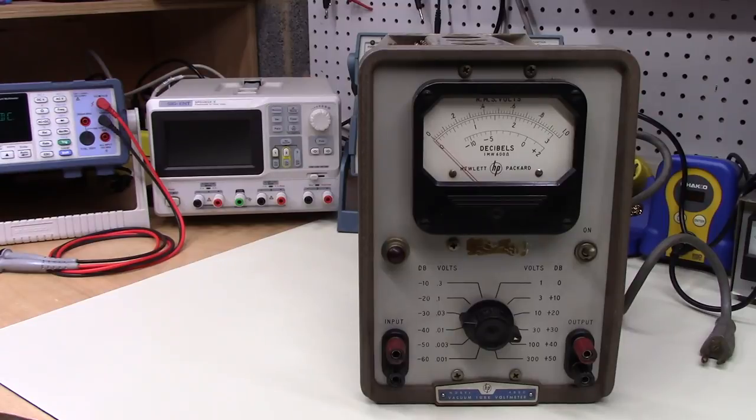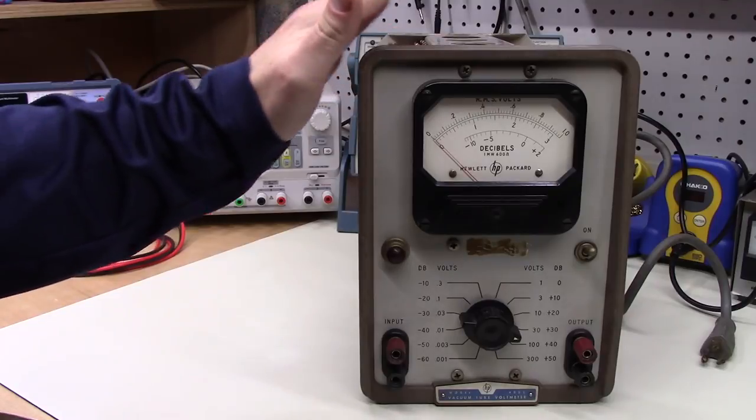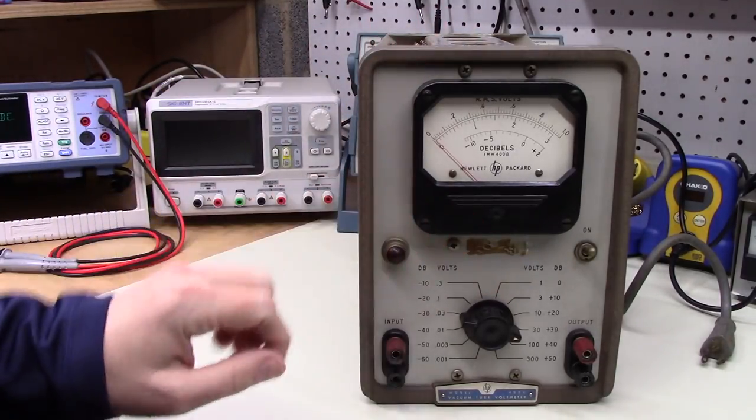Okay, I've got some work done on this Hewlett-Packard 400D AC vacuum tube voltmeter. I've cleaned it up a bit more. I'm kind of cleaning it up as I go along. You can see it's looking pretty nice.